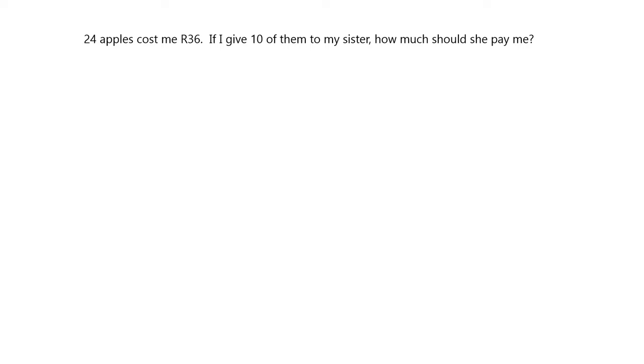Let's have a look at another example. If we've got 24 apples costing 36 rand, and I want to give 10 of them to my sister and I need to know how much to charge her, I don't want to make a profit, I just want her to pay the same amount that they're worth. I've got to go from 24 apples, I've got to figure out 10. And I can't easily see what am I divided by to get from 24 to 10. So I'm going to use that idea. I'm going to use the idea of going to 1 first. Because it's always easy to see that what I've done to get from 24 to 1 is I've just divided by 24.